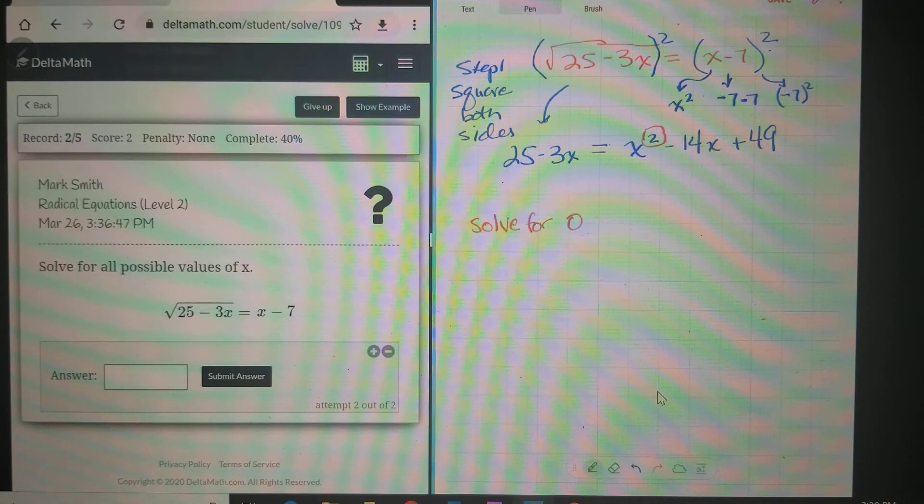We're going to need to solve for zero. To solve for zero, I'm going to have to subtract 25 and add 3x. That will give me a zero on this side. Over here I'm going to add 3x and subtract 25.